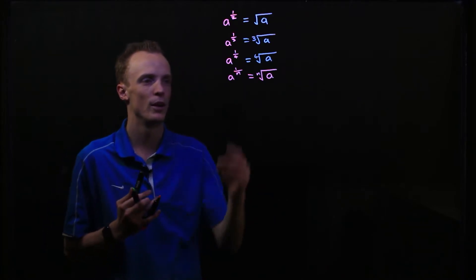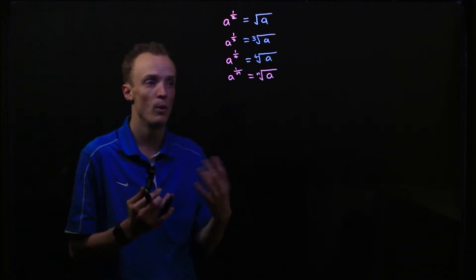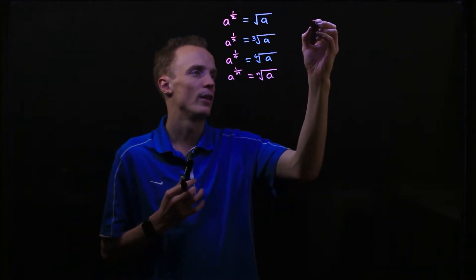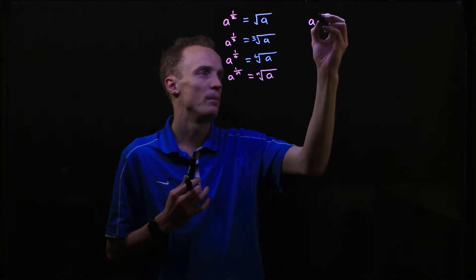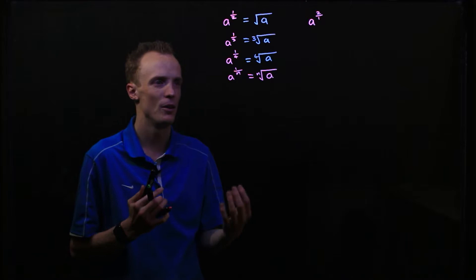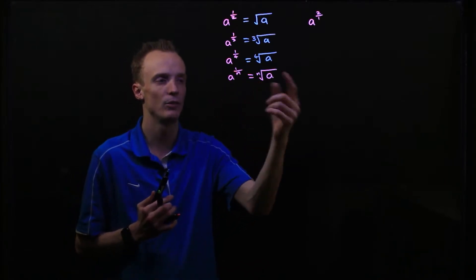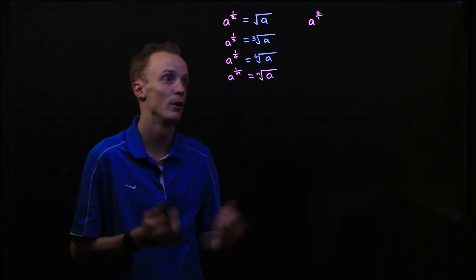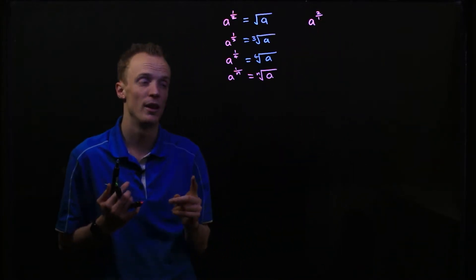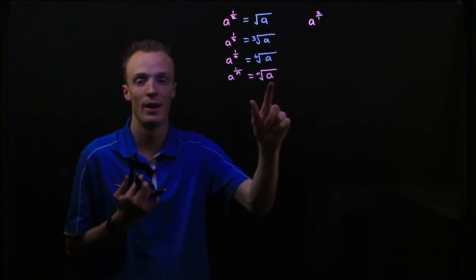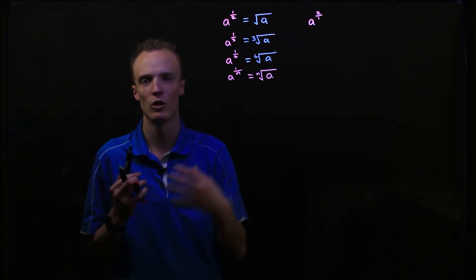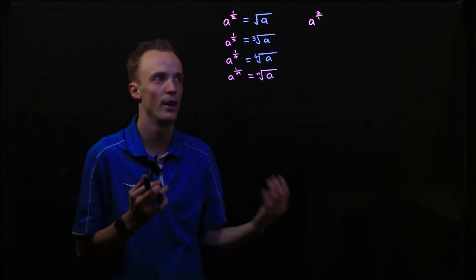Now that's all well and good if we've got a numerator value that's 1. But what happens if our numerator value isn't 1? To answer that question, consider this: what if we had a number with the power of 2 over 1? We know the denominator tells us to find the nth root of whatever base value we've got. But our denominator is 1, which tells us to find the first root of it — and the first root of it is just the value that we've got.